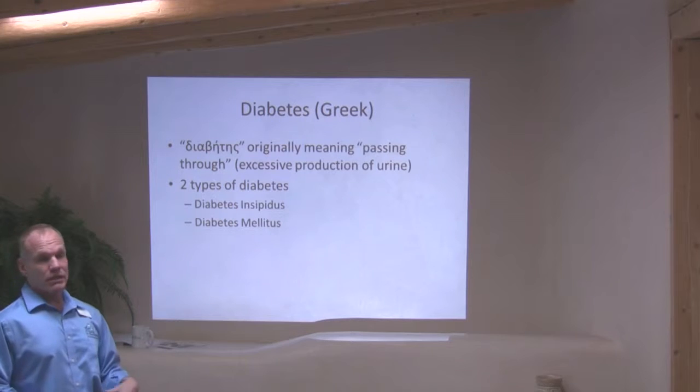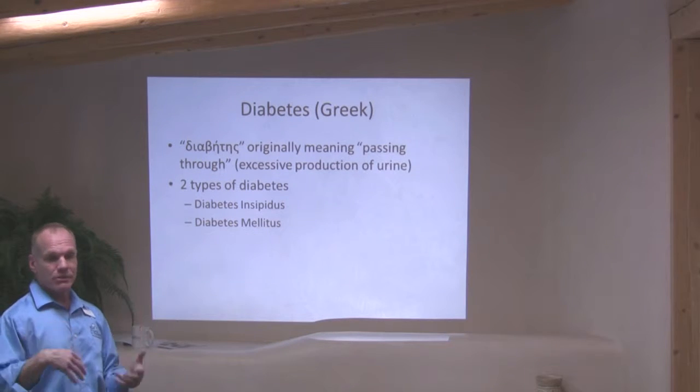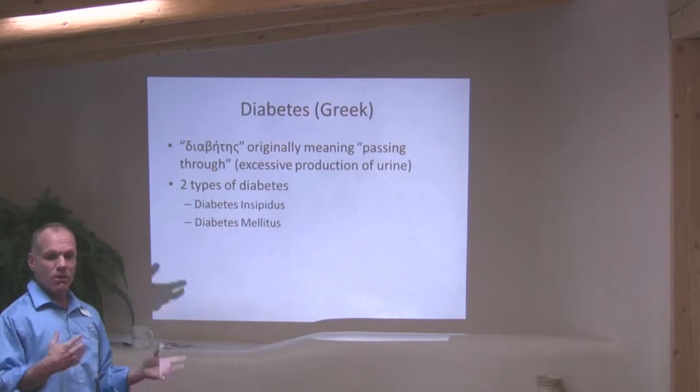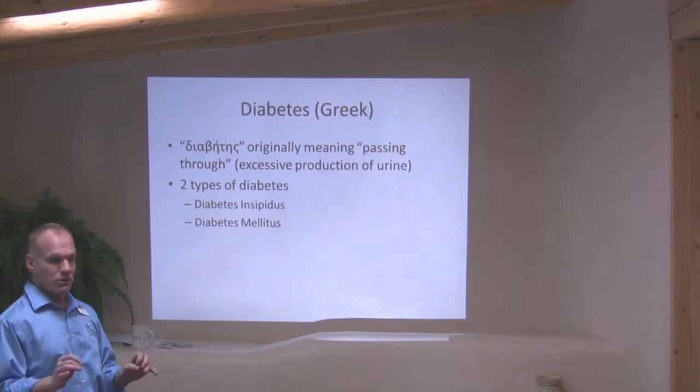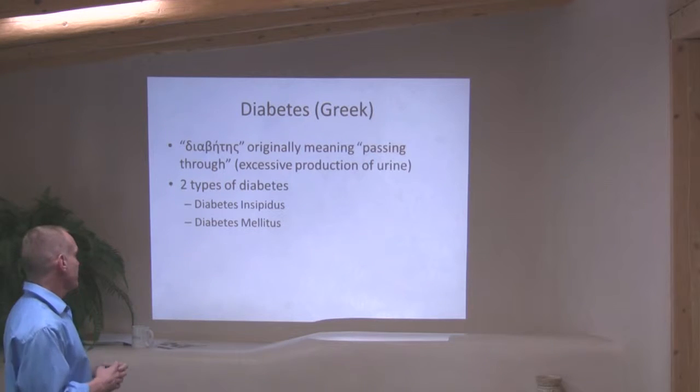Because you're peeing a lot, you get dehydrated, so you drink a lot — that's called polydipsia. Polydipsia and polyuria are the two main symptoms of any type of diabetes.